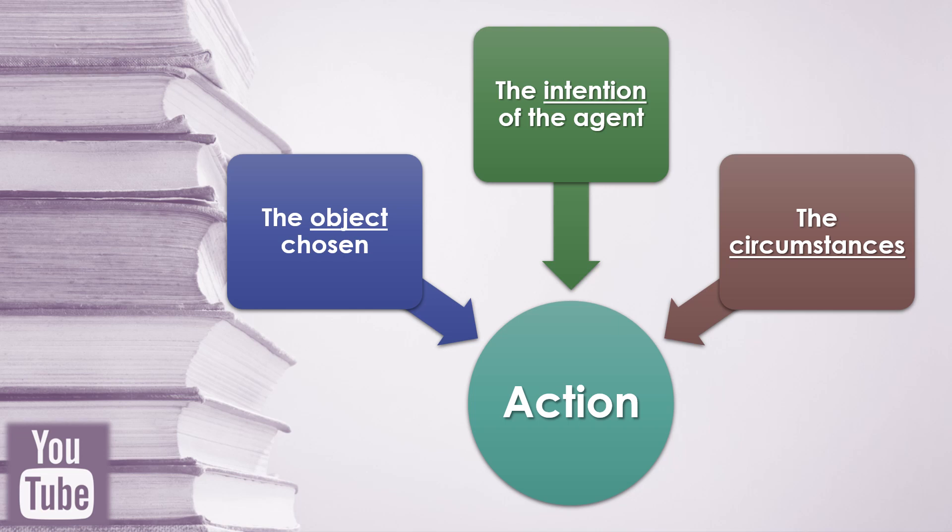Here enters the importance of the determinants of morality. Since the goodness of an action lies in its ordination to the last end, there are two conditions that should be fulfilled for it to be considered good: first, that the act itself can be ordained to God, and second, that the agent actually ordains it to God. Thus, the two principal elements of the act — namely the object or means, and the intention of the agent also called end — must be ordained to the last or ultimate end. The circumstances, though accidental to the action, must also be ordained to the last end, since they could also be important.